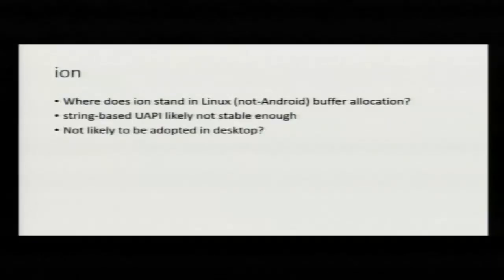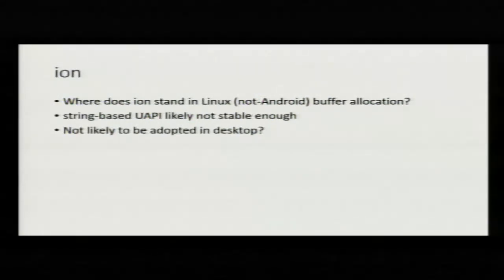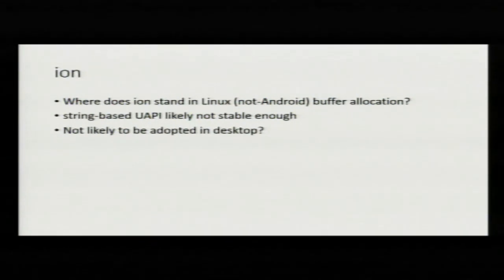Ion exists. I'm not sure really where it stands. Obviously there's the to-do list to try and get it out of staging. I don't know if there's interest in the wider community in pushing that through and getting it adopted on places that aren't Android. I don't know if it's likely to be adopted on desktop because I think the centralised allocator model probably doesn't suit desktop cards so well. The string-based UAPI, or the new UAPI, maybe isn't good enough for a stable generic allocator, so that might be worth looking at.